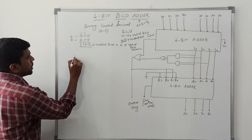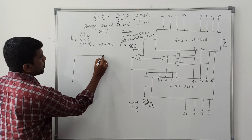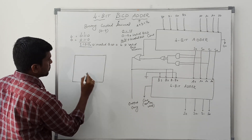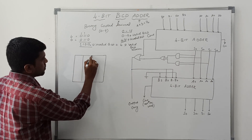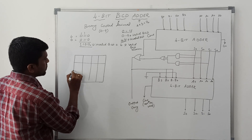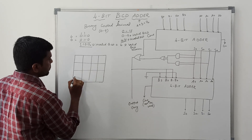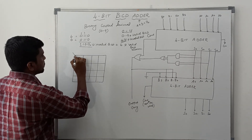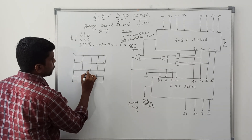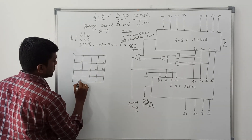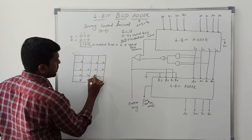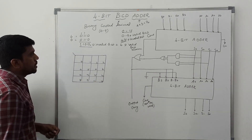To determine when to add 6, I am using a 4-variable K-map with 16 cells. The cell numbers are arranged as: 0, 1, 3, 2, 4, 5, 7, 6, 8, 9, 11, 10, 12, 13, 15, 14.